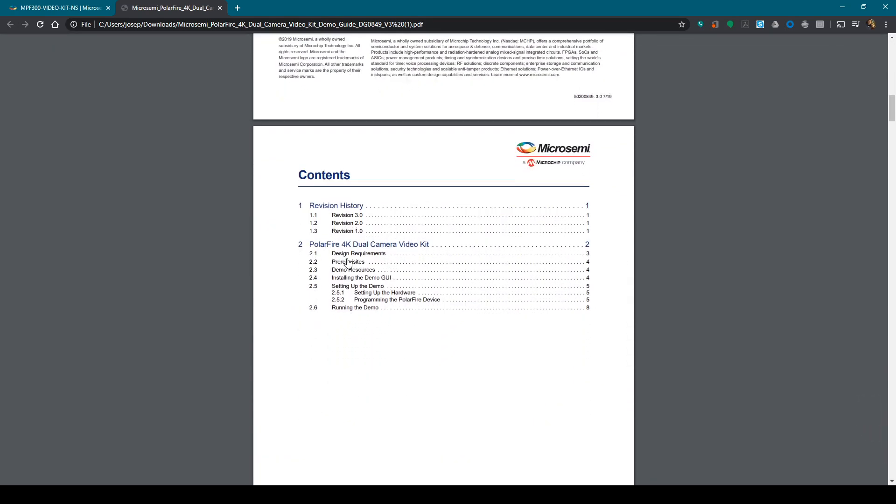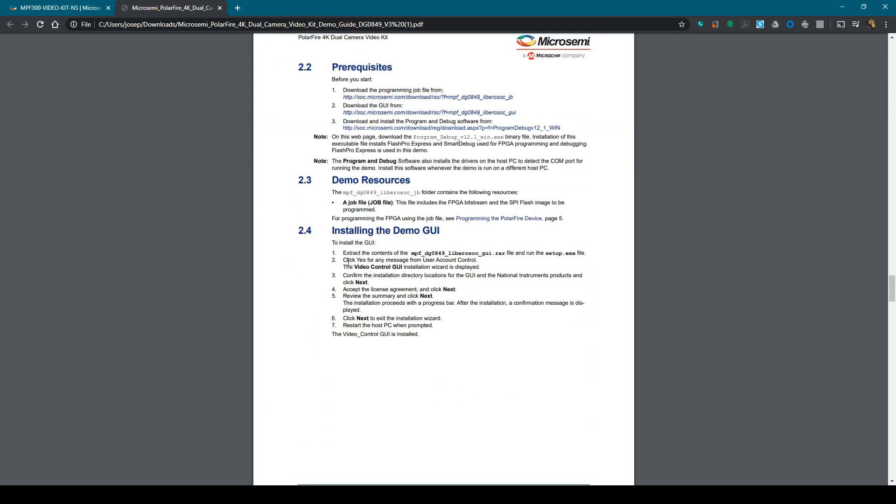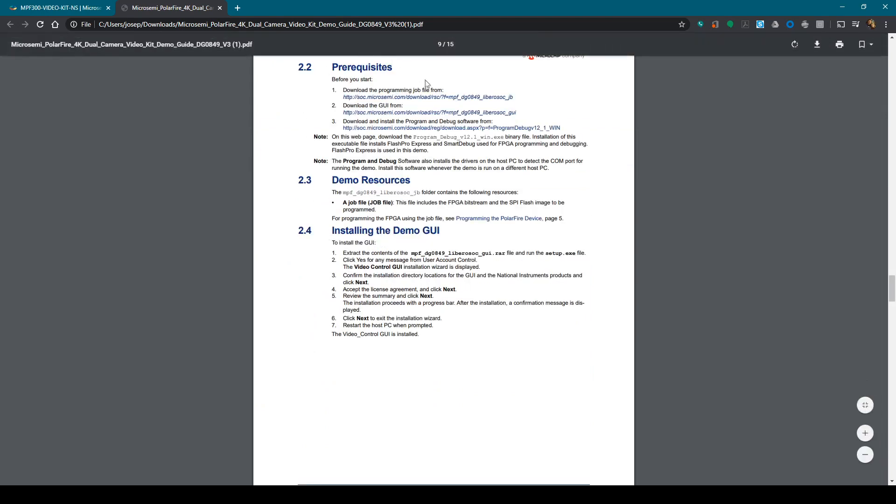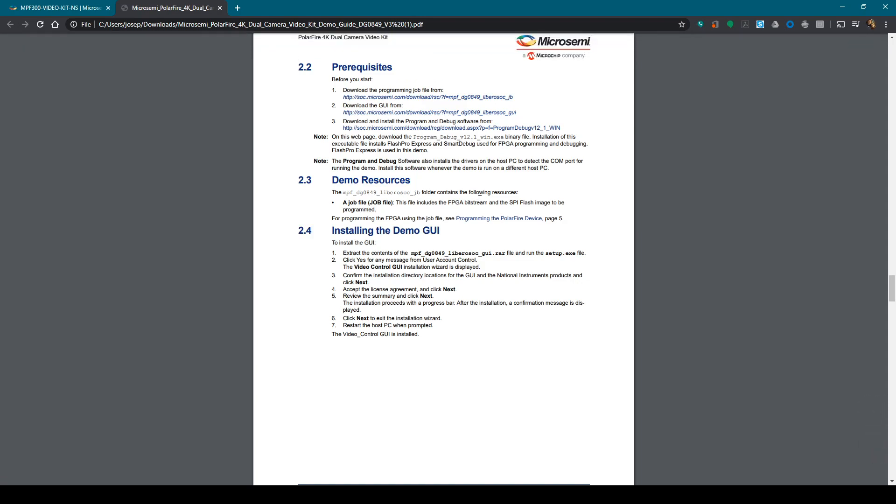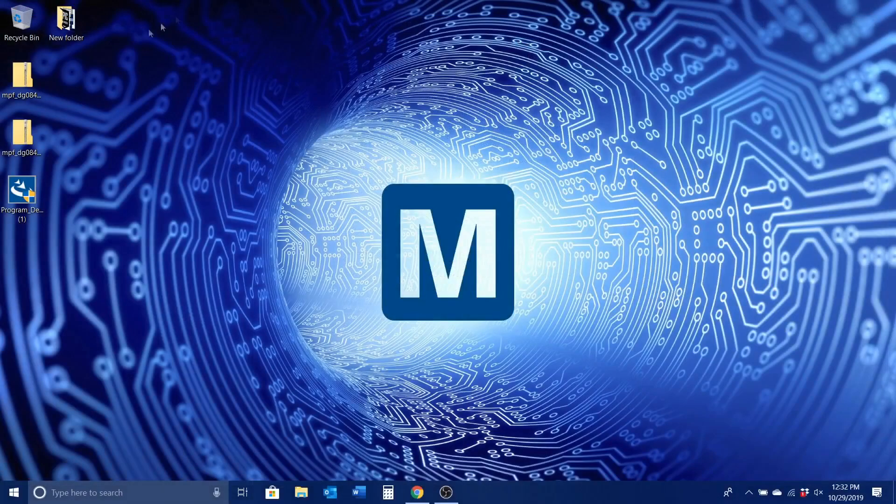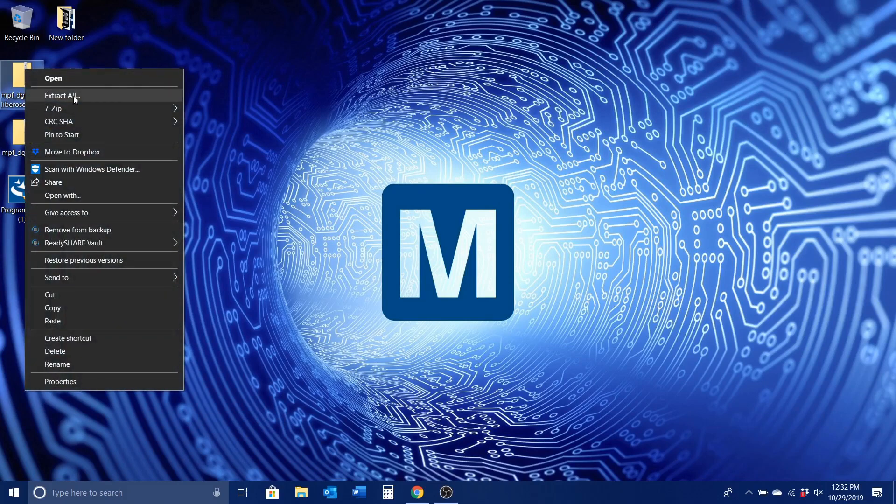Locate section 2.2 for the prerequisites, which will provide links for downloading the required software. Click each link and download the required programming and installation files. Please note that an account will be required. Locate the downloaded items and extract the archived files.